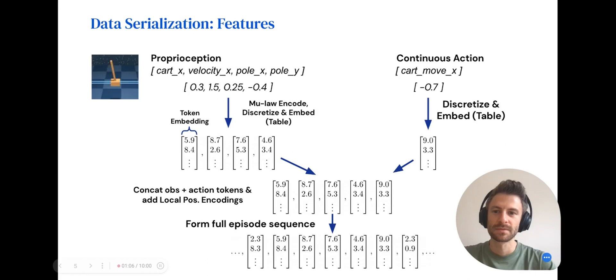So now, on to the model. We need to serialize different data modalities to convert them into a unified format so they are compatible with our model. We serialize continuous values differently depending on if they are observations or actions. Observations are first mu-law coded before discretizing the floats into integers. Actions, on the other hand, skip the mu-law coding and are directly discretized into integers. These integers are then used as keys to lookup vectors in a learnable embeddings table. Finally, the observation and embedding vectors are concatenated together and the local position encodings are added to them, which I'll explain in the next slide. This is the process for a single environment time step. Multiple time steps are concatenated together to form a trajectory, which is what we use as input data during training.